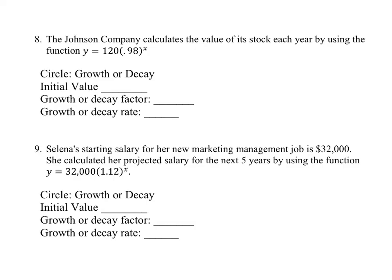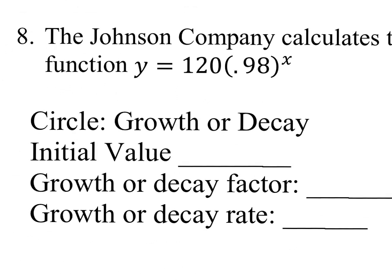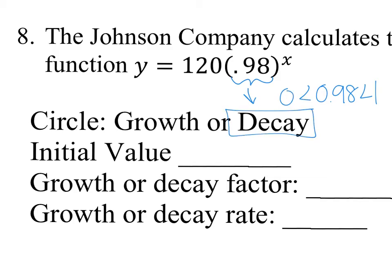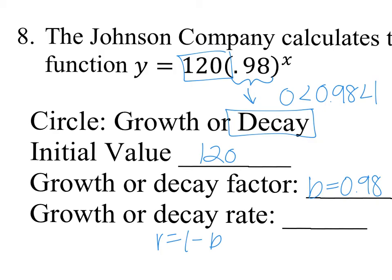Looking at the Johnson Company: they calculate the value of its stock each year using the function y equals 120 times 0.98 to the x power. Is it growth or decay? 0.98 is between 0 and 1 — just barely — but it is decay. My initial value is what comes first, so 120. My decay factor is just b, and b equals 0.98. My decay rate is 1 minus b, and 1 minus 0.98 is 0.02. So that is my decay rate.